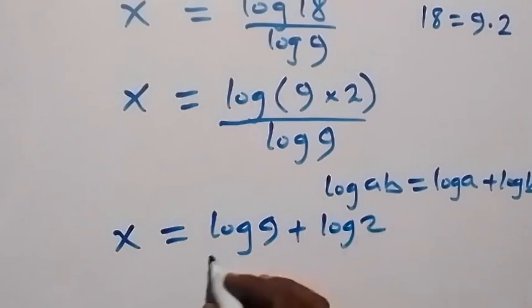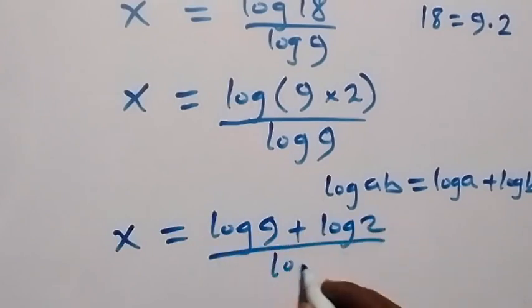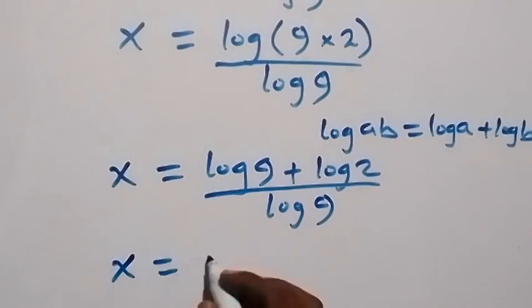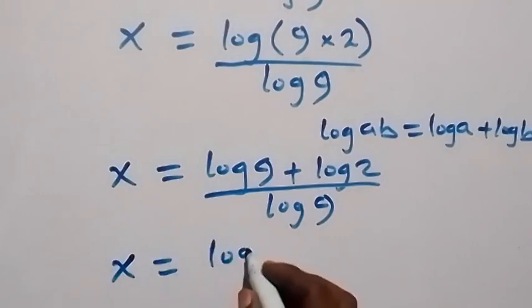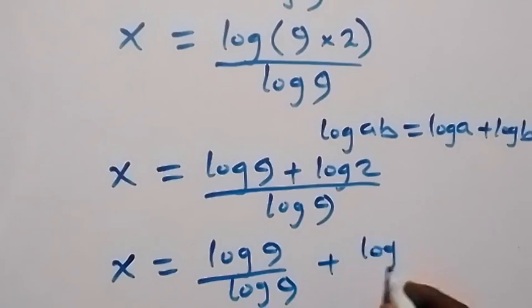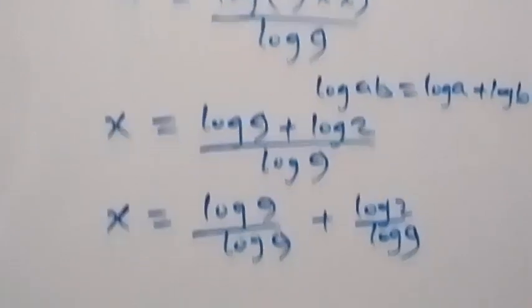all divided by log 9. Then we have x equals log 9 over log 9, plus log 2 over log 9.